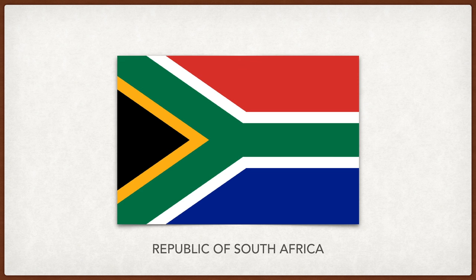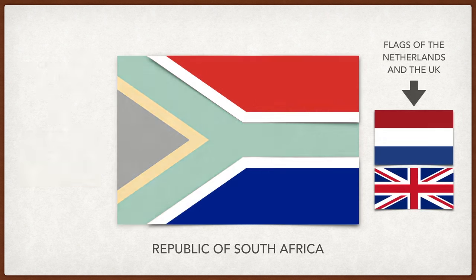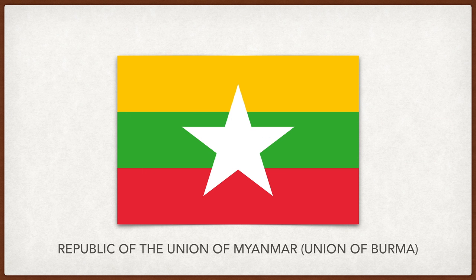South Africa. The black, green, and yellow represent the black population because of its association with the African National Congress Party. Red, white, and blue represent the white population because of its history with the Dutch and the British. The Y shape is a symbol of unification of the various ethnic groups.